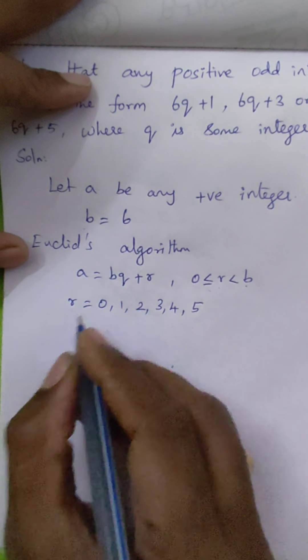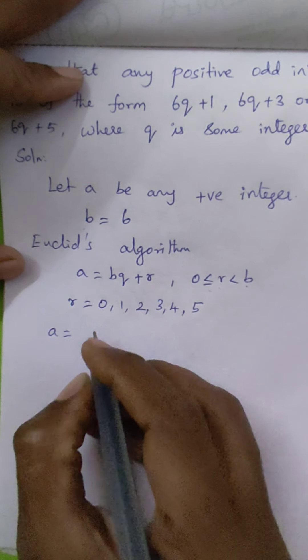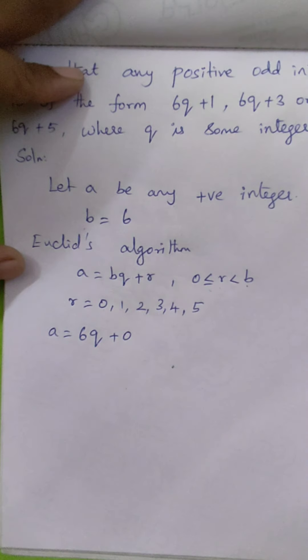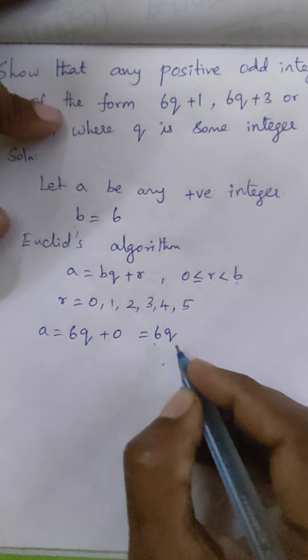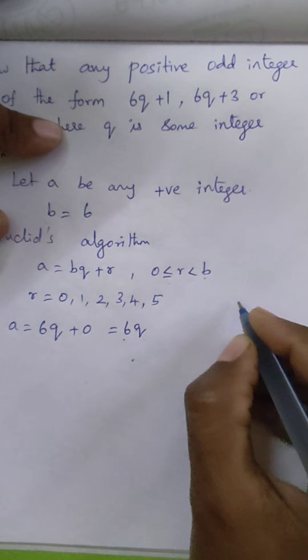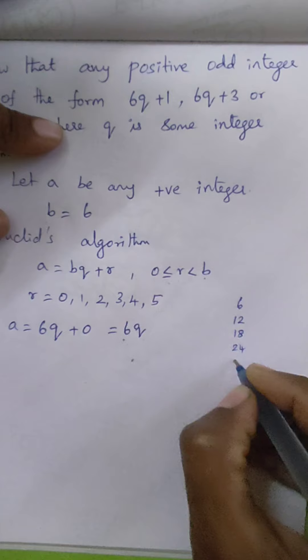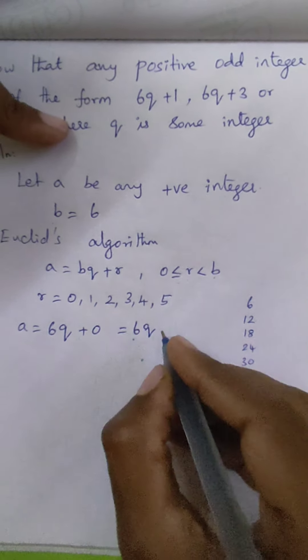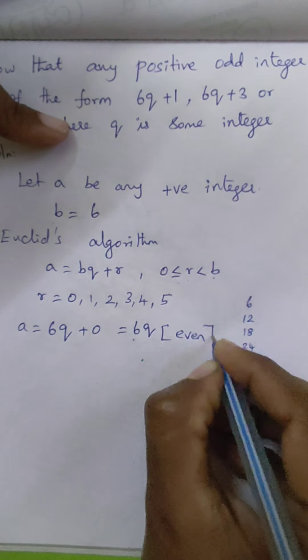First, let me take r equal to 0, so a equals 6q plus 0, which equals 6q. 6q is nothing but a multiple of 6. So the values will be 6, 12, 18, 24, 30. All these values are even integers.